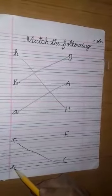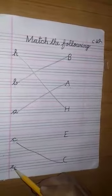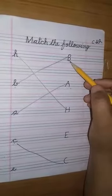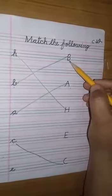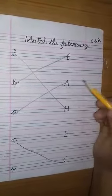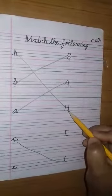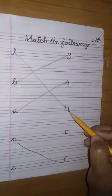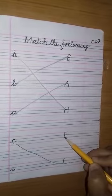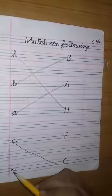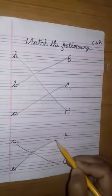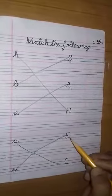Now this is cursive E. Do we have to match with capital E? Where is written capital E? Is this capital E? No, this is capital B. Is this capital E? No, this is capital A. Is this capital E? No, this is capital H. Is this capital E? Yes, this is E. Now draw a line to match cursive E with capital E. E says A.